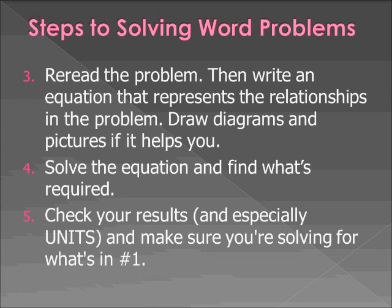Secondly, choose a variable and use it with the given facts to represent the numbers described in the problem. It's good to get in the habit of saying, let x equal this or y equal this. You don't have to do it, but it just makes things easier because it kind of sets the parameters for you to solve the problems. Reread the problem and write an equation that represents the relationships. Draw diagrams and pictures and charts if it helps you. And solve the equation, find out what's required, and don't forget to check your results and write down the units. If you don't write down the units, you're going to lose points.